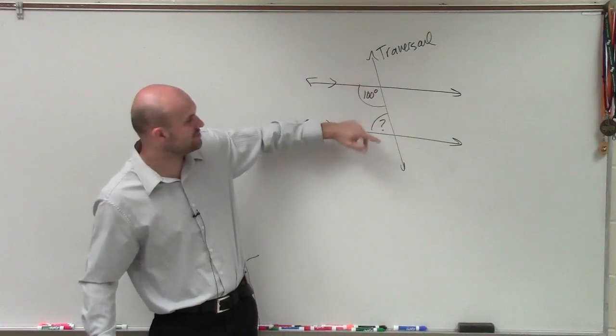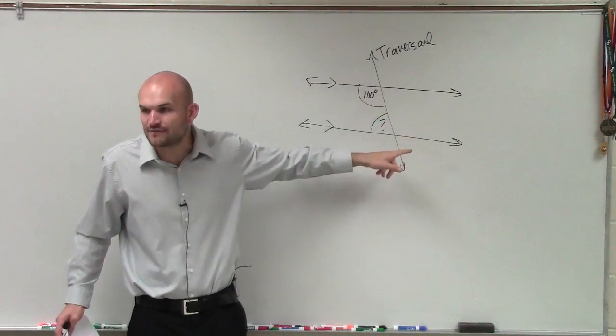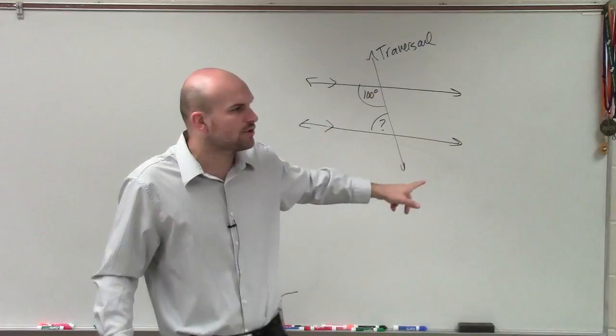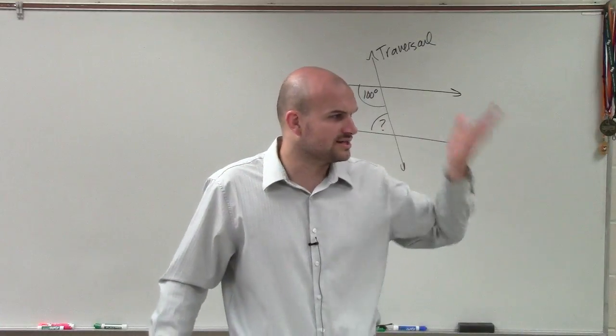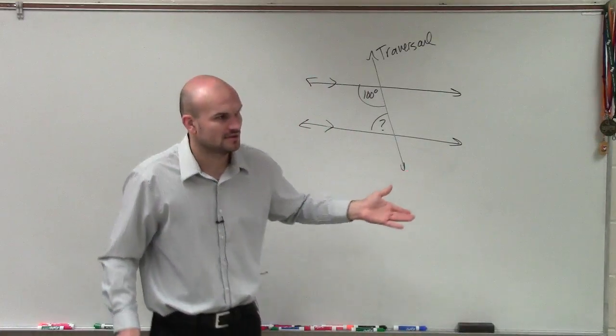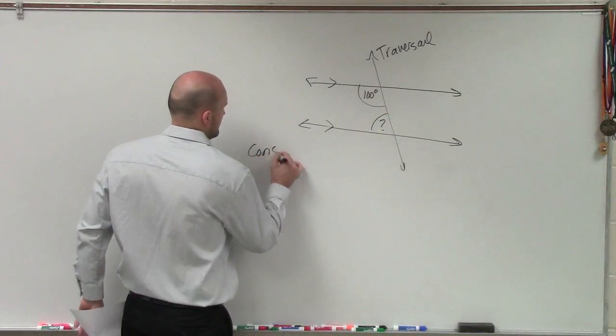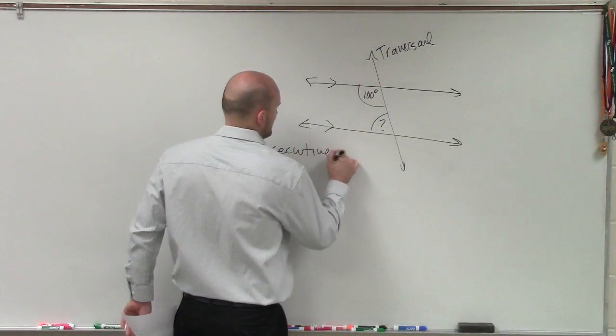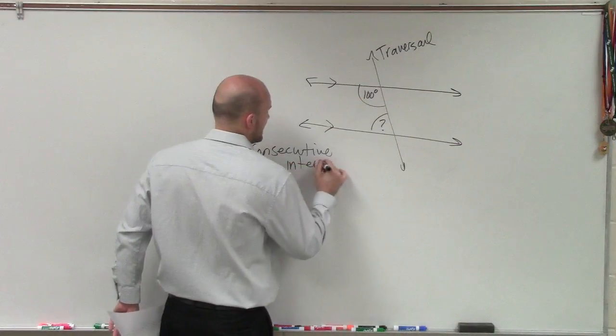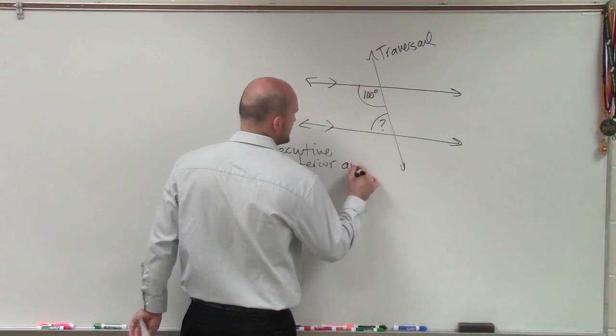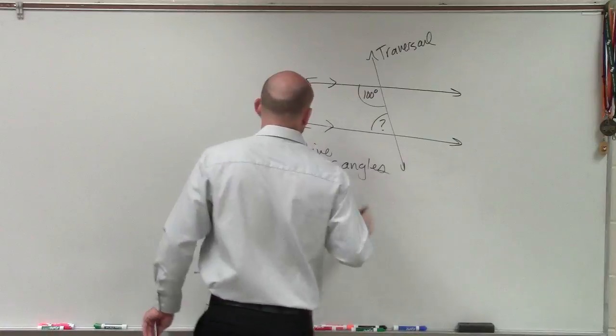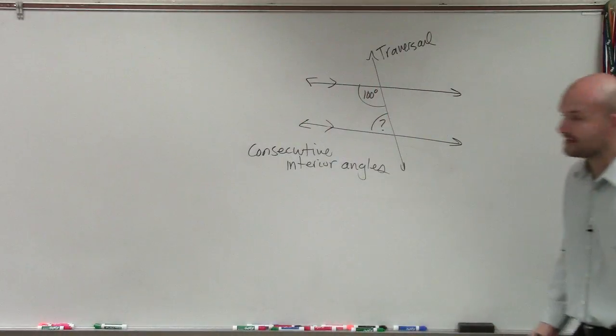So on here, we have two angles that are on the same side of the transversal. So what do you think would work better? Alternating or consecutive, one after another? Exactly. So these two angles are what we call consecutive interior angles. And when you guys are doing all these problems, you're going to have to write this down.